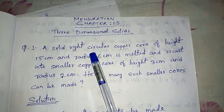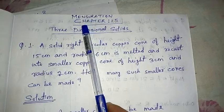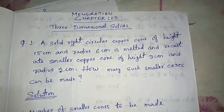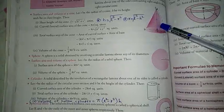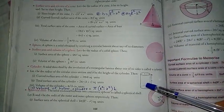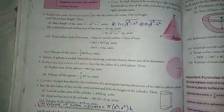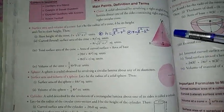Class 10 children, today we will learn the mensuration portion, Chapter 15: 3-dimensional solids. You have one good news — in the reduced syllabus this time, you need to learn only cone and cylinder. Sphere has been removed from the reduced syllabus.